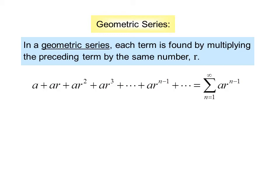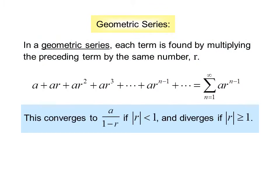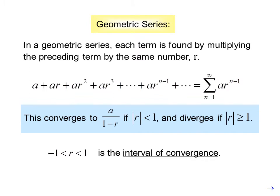Geometric series. In a geometric series, each term is found by multiplying the preceding term by the same number r. We have a plus a times r plus a times r squared plus a times r cubed, and the general term is a times r to the n minus one. So the sum is the summation from n equals one to infinity of a times r to the n minus one. This converges to a over one minus r if the absolute value of r is less than one, and diverges if the absolute value of r is greater than or equal to one. So the interval from negative one to one is the interval of convergence.